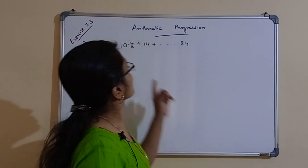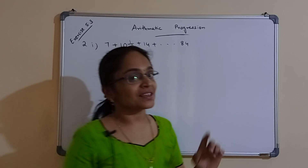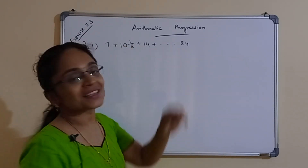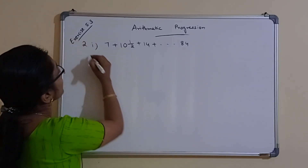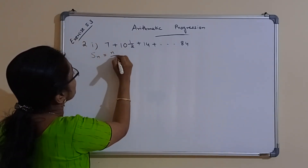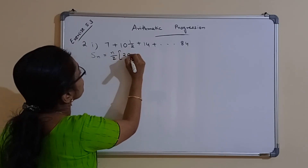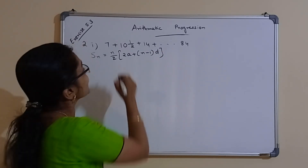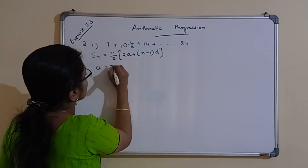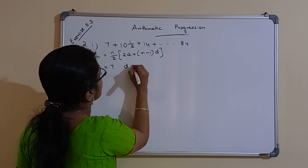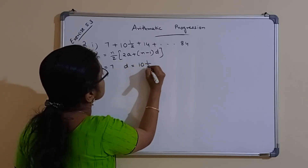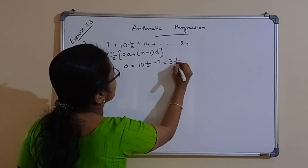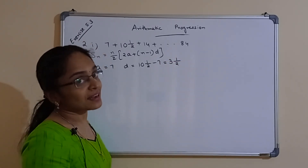So let us start now. The question is: find the sums given below. The first sub-part is 7 plus 10 and a half plus 14 plus ... up to 84. We know the formula Sn = n/2 into (2A + (n−1)×D). Here we know that A is 7 and D is 10½ minus 7, which is 3½.